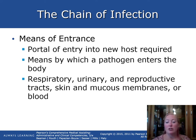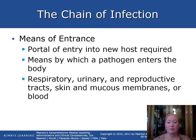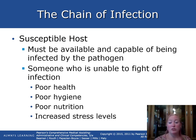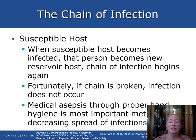The means of entrance is the portal by which the pathogen enters the new host. In Typhoid Mary's case, it was through the mouth when people ate her food. Other portals include the respiratory, urinary, and reproductive tracts, skin, mucous membranes, and blood. The host must be susceptible — unable to fight off the infection due to poor health, poor hygiene, poor nutrition, or increased stress. When the susceptible host becomes infected, that person becomes the new reservoir host and the chain begins again.